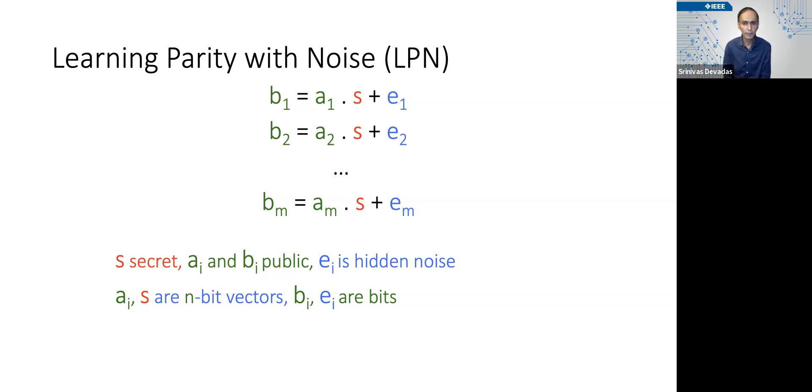The classic LPN problem is shown here where there's a set of linear equations associated with bᵢ = aᵢ·s + eᵢ, and there's essentially M of these equations where s is the secret. It is an N-bit secret. Each of the aᵢs are N-bit vectors, so you can take the dot product and get a bit out of it.